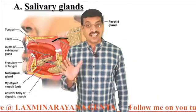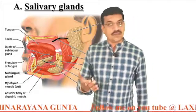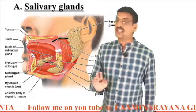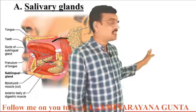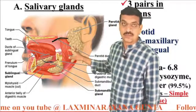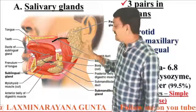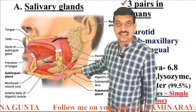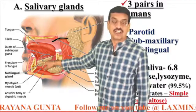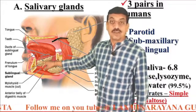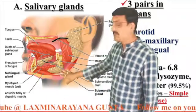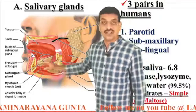The first gland is the salivary glands. There are three pairs of salivary glands in humans, whereas other mammals have four pairs. These three pairs are: the parotid glands, which are present below the pinna; the submaxillary or submandibular glands, present at the angles of the jawbone; and the sublingual glands, present below the tongue — 'lingua' meaning tongue.